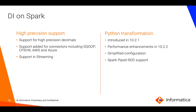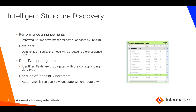High precision support has been introduced in 10.2.2 and can be used across Hue, complex file, AWS, and Azure ecosystems as well as in streaming use cases. The Python transformation introduced in 10.2.1 has seen major performance enhancements and a much more simplified configuration. Intelligent Structure Discovery now supports data drift use cases — if you provide a different file at runtime or your data changes over time and no longer matches the original sample schema, you can see additional attributes flowing into your mapping through the newly introduced unassigned data pool and make data-driven decisions inside your BDM mapping.